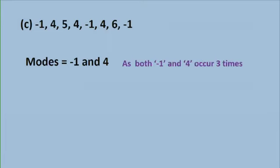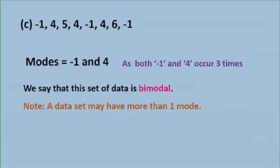Now let us look at part C: -1, 4, 5, 4, -1, 4, 6, and -1. If we look at this set of data, we can see that -1 occurs three times. 4 also occurs three times. So here we have two values corresponding to the mode. So the modes will be -1 and 4, because both -1 and 4 occur three times. We say that this set of data is bimodal. In fact, a data set may have more than one mode.